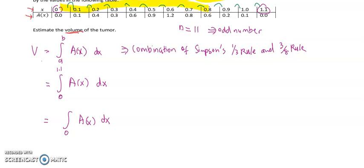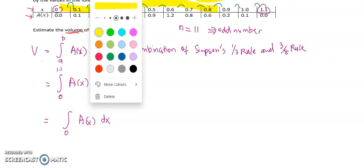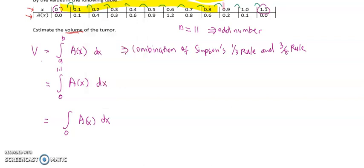So this is the first 8 intervals: 1, 2, 3, 4, 5, 6, 7, 8. And the final 3 intervals, we must use Simpson's 3/8 rule. So for the upper limit of the first integration, the value is 0.8.